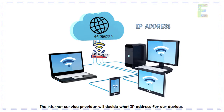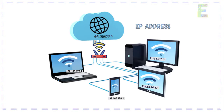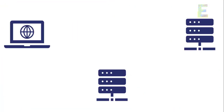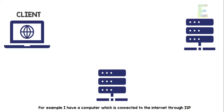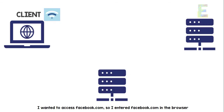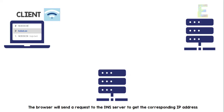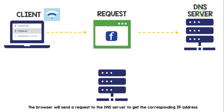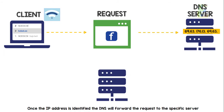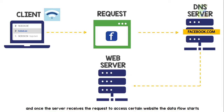The Internet Service Provider will decide what IP address our devices get. For example, I have a computer connected to the Internet through an ISP. I wanted to access Facebook.com, so I entered Facebook.com in the browser. The browser will send a request to the DNS server to get the corresponding IP address. Once the IP address is identified, the DNS will forward the request to the specific server. And once the server receives a request to access a certain website, the data flow starts.